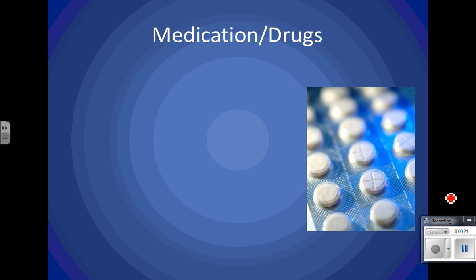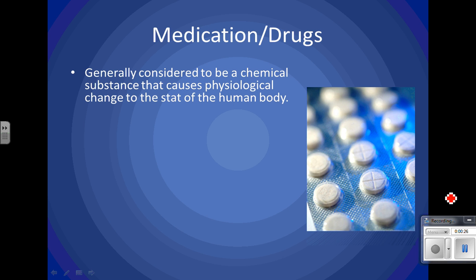We're going to use the term 'drug' from now on, though generally the term is 'medication.' A drug is considered to be a chemical substance that changes the physiology of the human body — if something happens to your physiology, there's a change directly related to the medicine administered. We use them for prevention of disease, diagnosis of disease, and treatment.